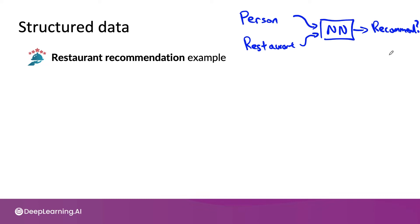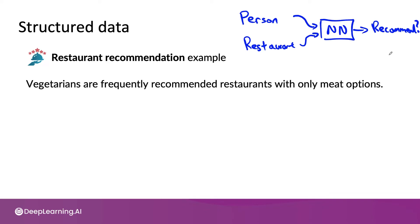In this particular real example, error analysis showed that the system was unfortunately frequently recommending to vegetarians restaurants that only had meat options. There were users that were pretty clearly vegetarian based on what they had ordered before, and the system was still sending them a hot new restaurant that it recommended, but it didn't have good vegetarian options. So this wasn't a good experience for anyone.